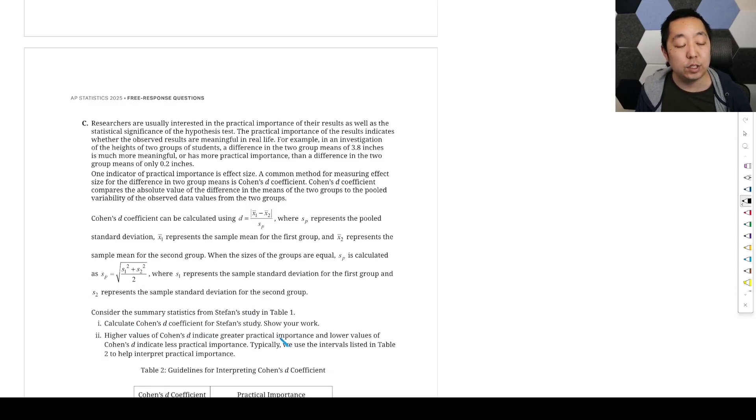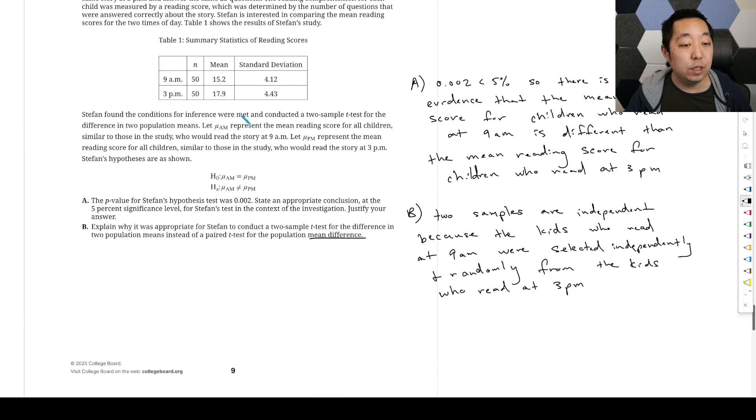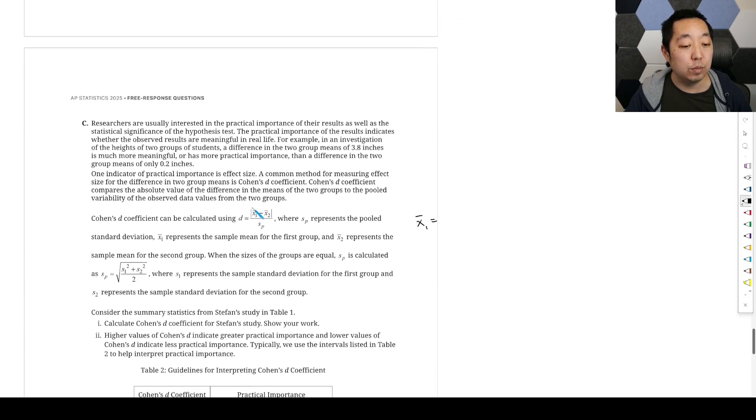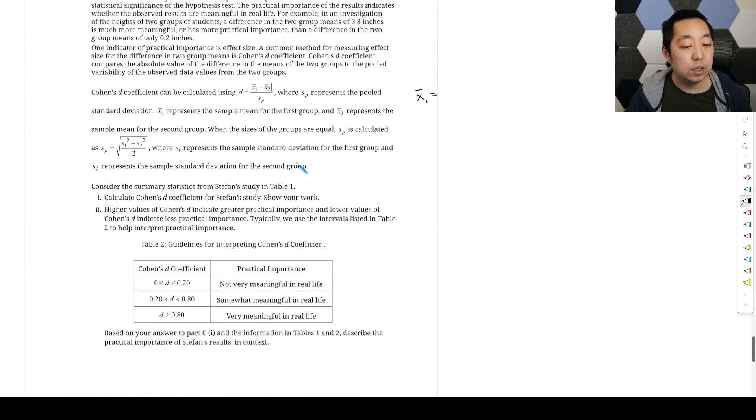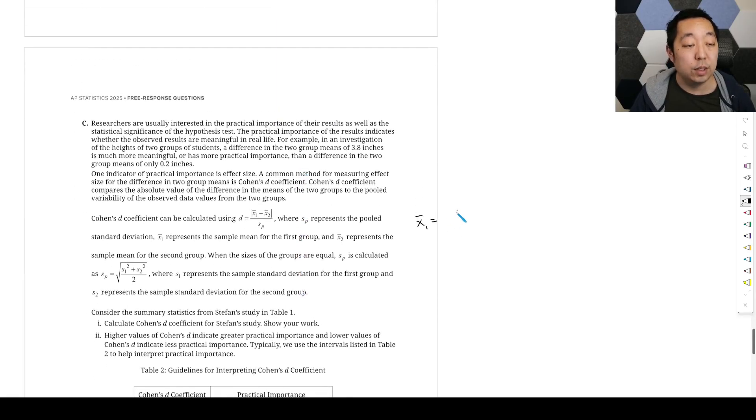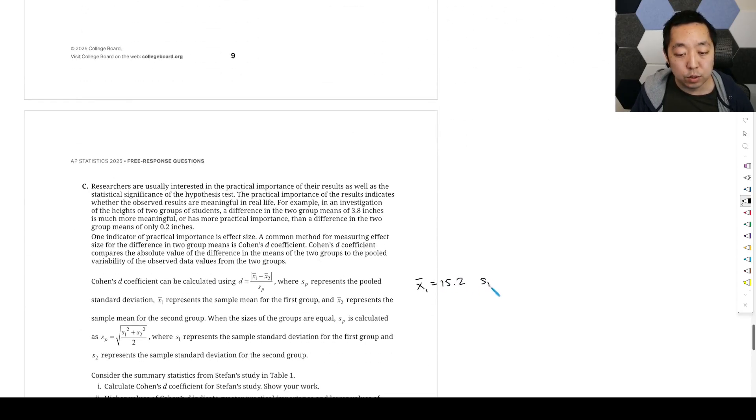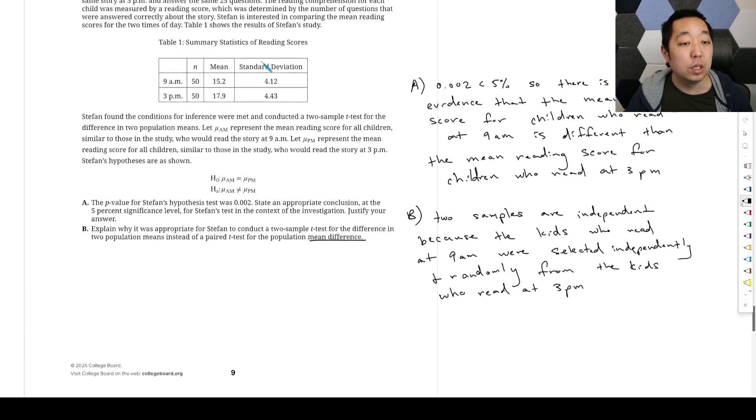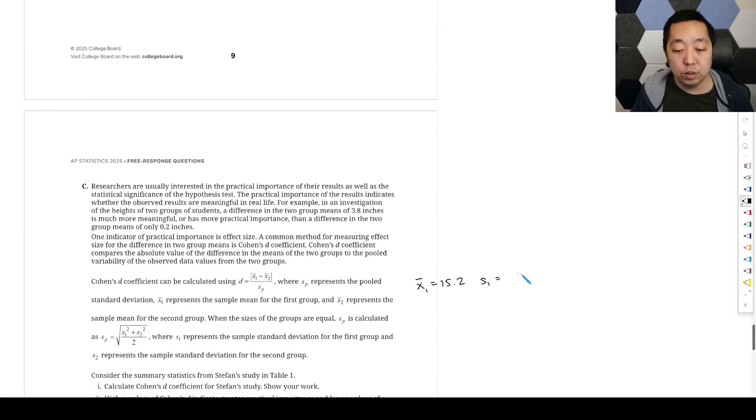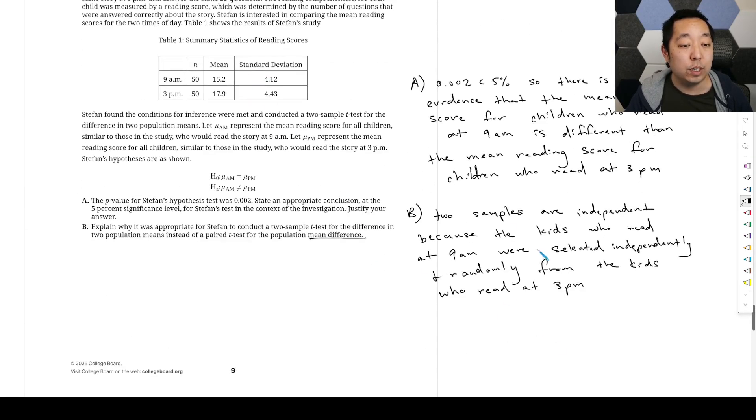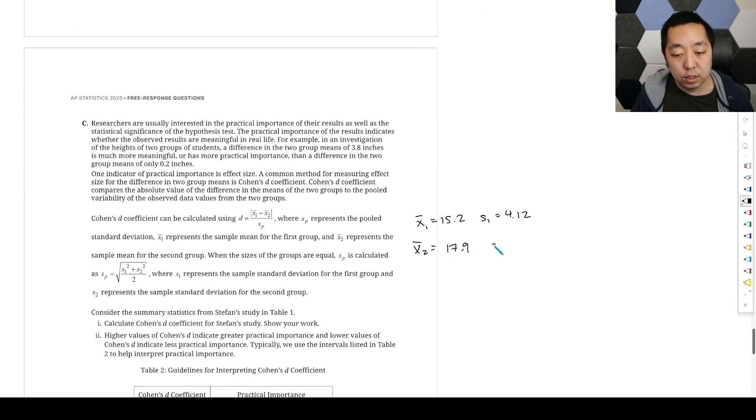Calculate Cohen's coefficient for Stefan's study and show your work. So we have X1 bar, the mean for the first sample, which is the morning people. That's going to be 15.2 and S1 is equal to 4.12. And then X2 bar, this is going to be the mean, it's going to be 17.9 and 4.43.